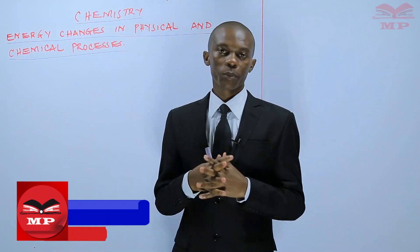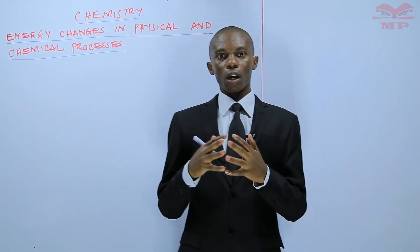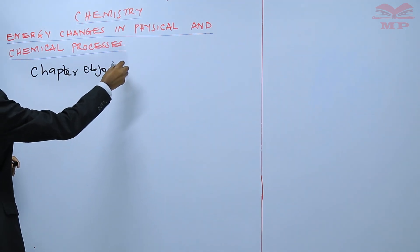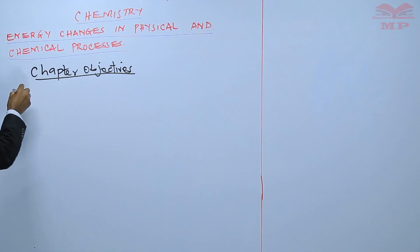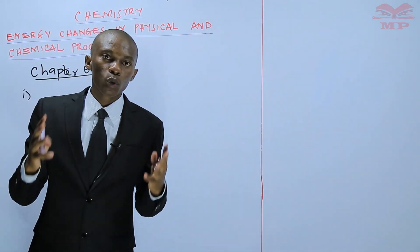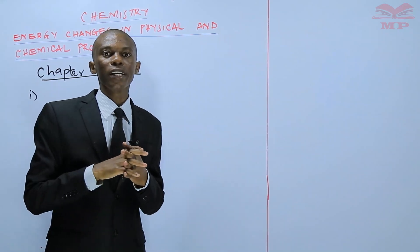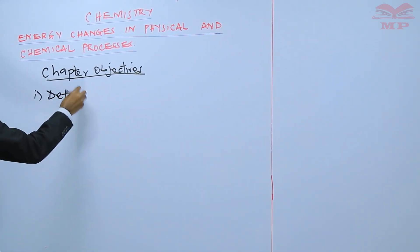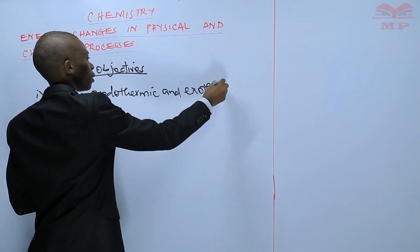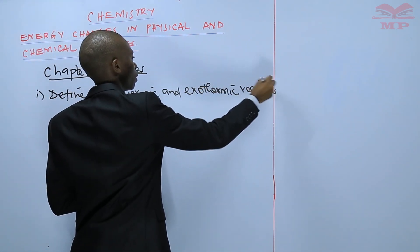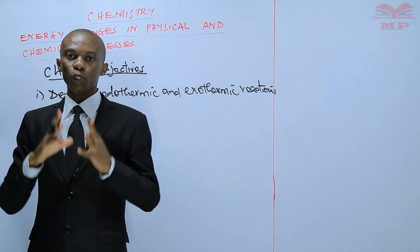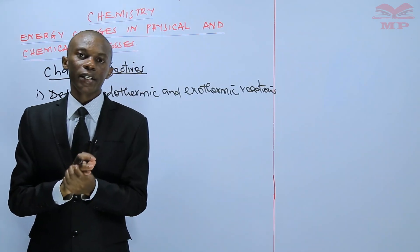I want us to go through the chapter objectives first. Our first chapter objective: by the end of this chapter, you should be able to define endothermic and exothermic reactions. Our second objective is that by the end of this chapter, you should be able to draw the energy level and energy cycle diagrams.